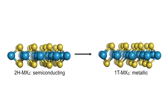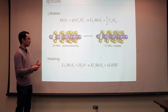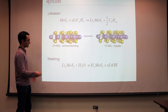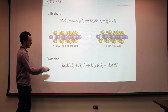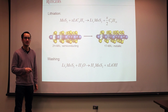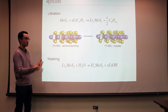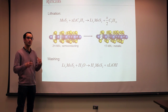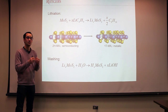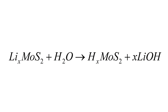In the second step, we wash the lithiated MoS2 to remove the lithium cations. We start with the lithiated material, called LxMoS2, and wash with water, which is a good solvent to remove the lithium cations. During this washing process, we exchange the lithium for protons and remove the lithium in the form of lithium hydroxide.